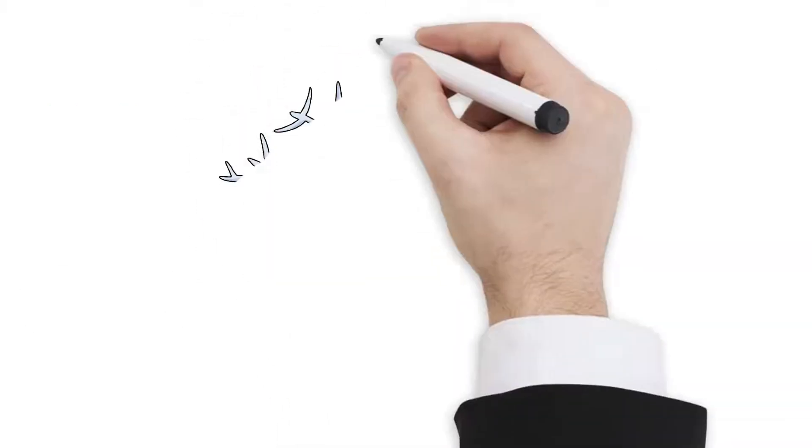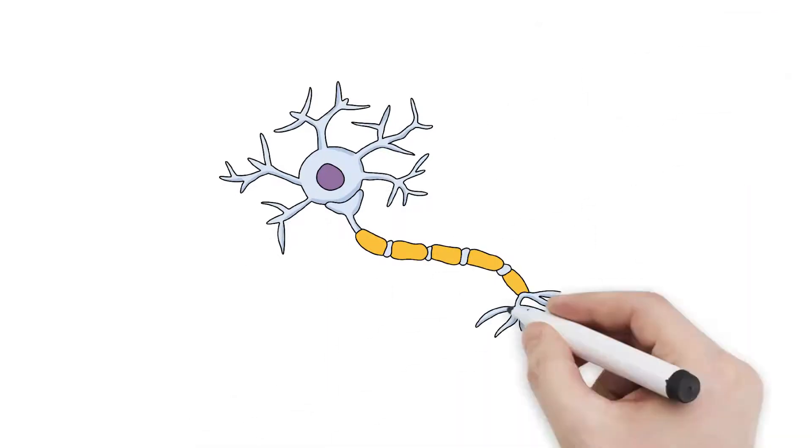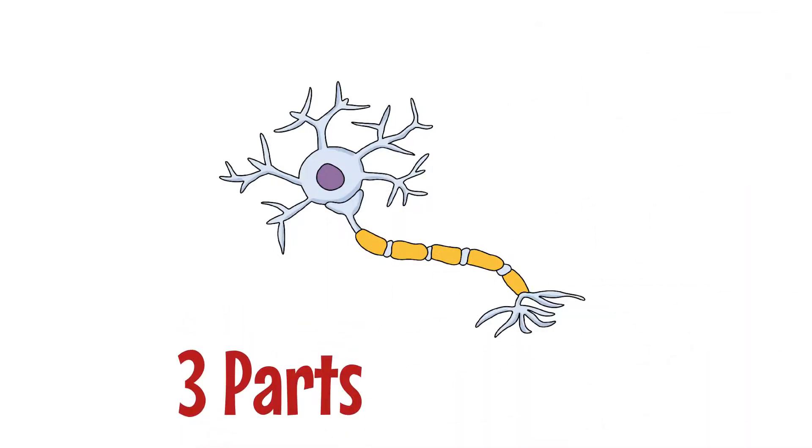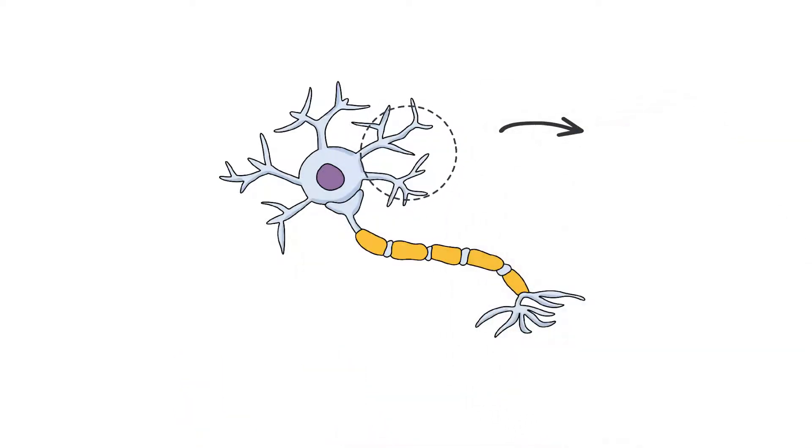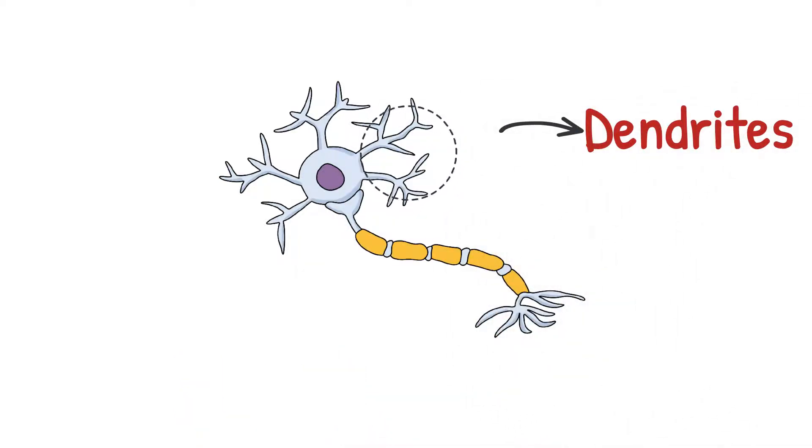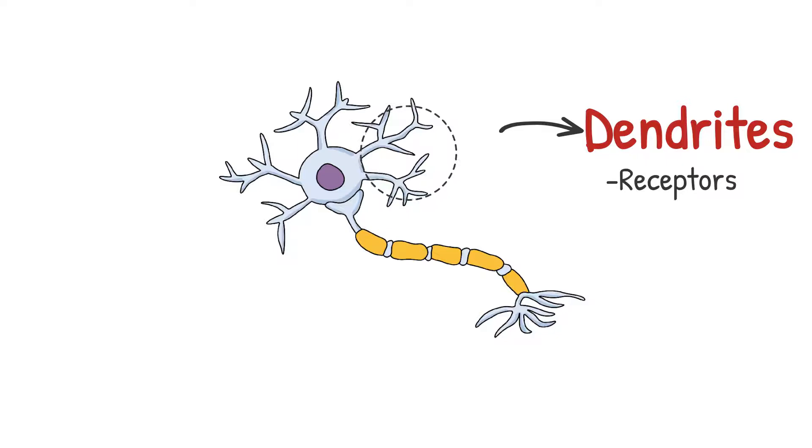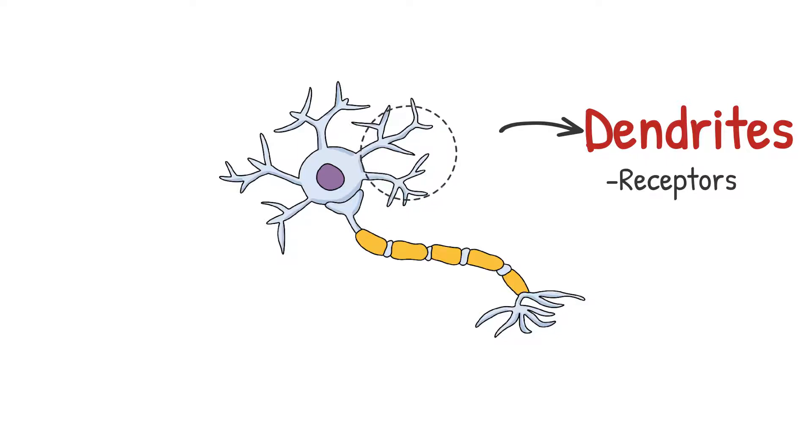The image we have here is a generic depiction of a neuron. Essentially, each neuron is divided into three parts. This part, which kind of looks like the branches or roots of a tree, are called dendrites. The dendrites or receptors receive signals from other neurons in the form of chemicals called neurotransmitters.